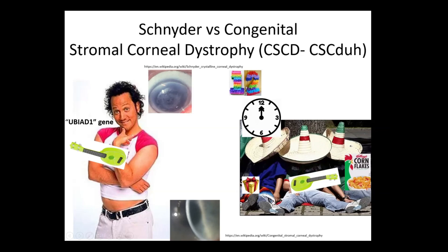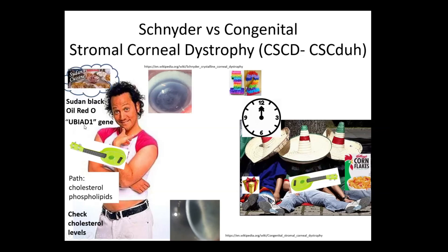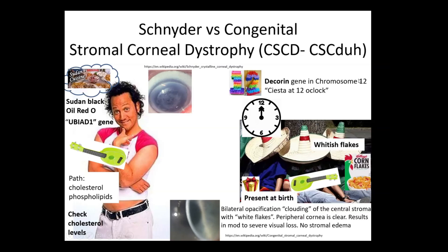Still in the stromal, we have Schneider corneal dystrophy and congenital stromal corneal dystrophy (CSCD). For Schneider, think of Rob Schneider — remember the UBIAD1 gene. He's got a chubby gut, so think cholesterol and phospholipids — check cholesterol levels if you see this cornea. It stains with Sudan black and Oil Red O. CSCD — think siesta — it's chromosome 12 and it's the decorin gene, so picture decorating piñatas. It's present at birth and it's stromal, with whitish flakes clouding the central cornea but with peripheral cornea usually okay.